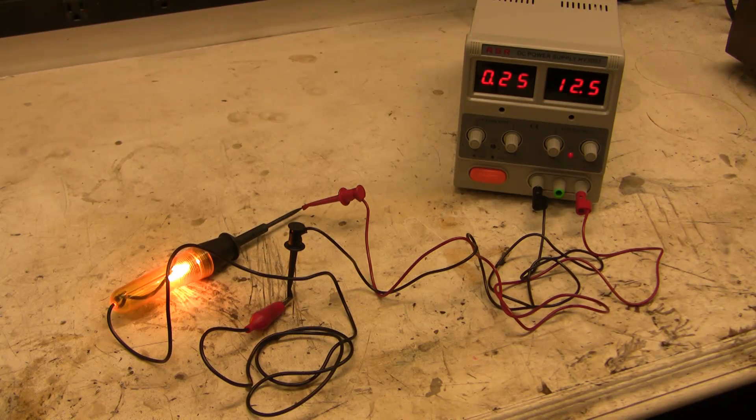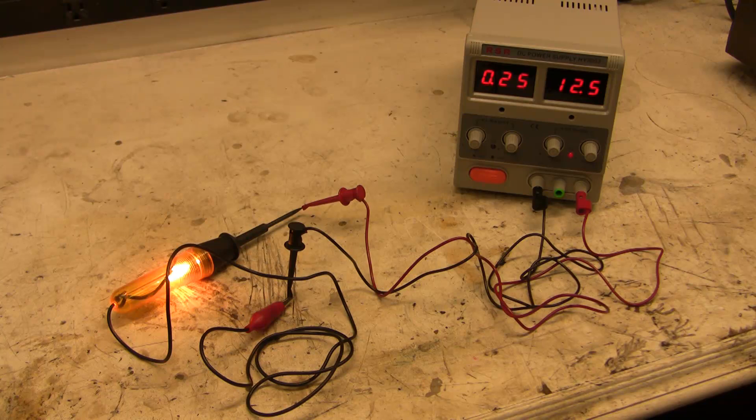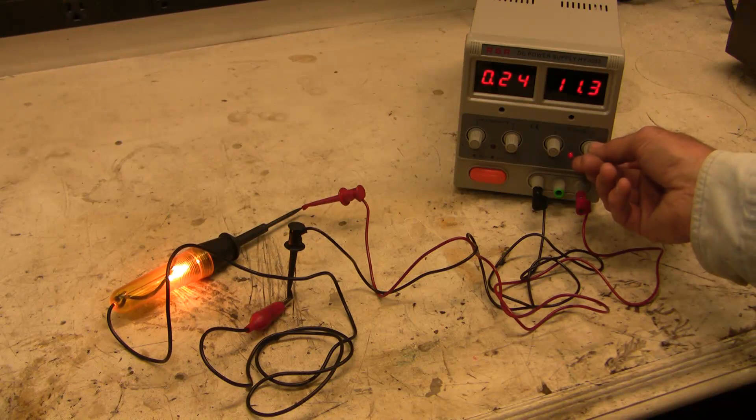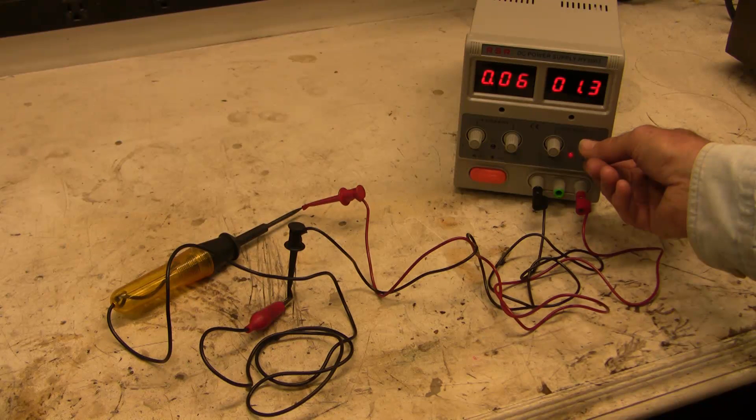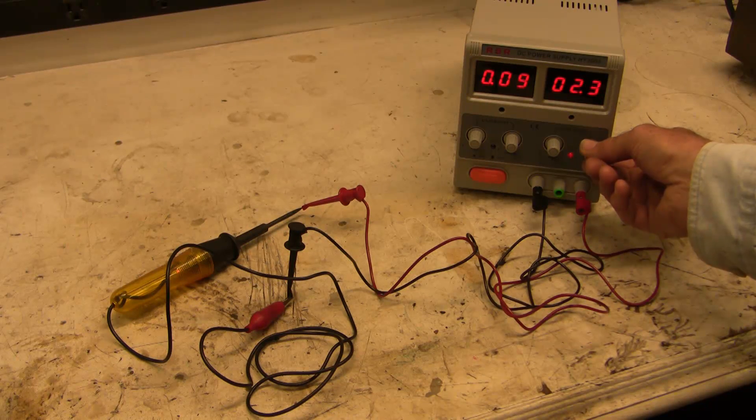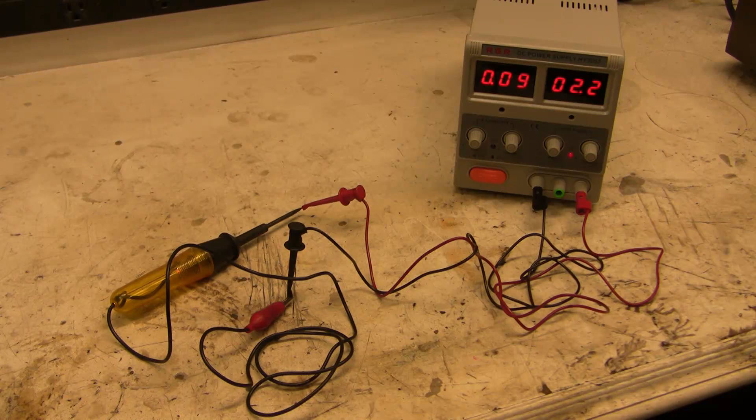One way to assess a test light is to measure the minimum voltage that results in a light that turns on. In this case my minimum voltage is about 2 volts before I see that light turn on in daylight.